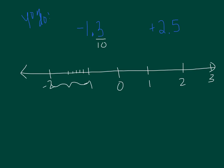So I'm going to split this section into 10 equal pieces. 1, 2, 3, 4, 5, 6, 7, 8, 9, 10. And I am in negative land, which goes that direction. And I'm standing currently at negative 1. And I need to go that direction 3 out of my 10 pieces. So 1, 2, 3. There is negative 1 and 3 tenths.